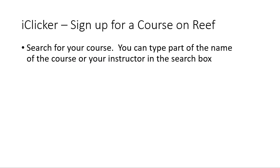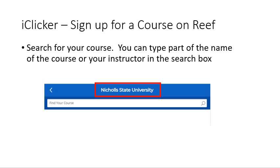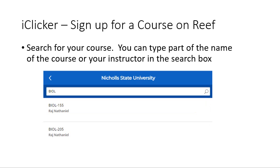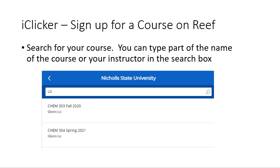Here's what happens when Nichols State University is selected as the institution. You can type part of the course name or your instructor's name in the search box. For example, if you type 'biol,' you will see a list of biology courses at Nichols State University. If you type 'LO,' you will see courses for which the instructor is named LO. Click the course you want to sign up for.